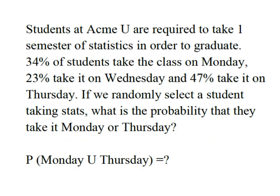In this case we have students at ACME U who are required to take one semester of statistics in order to graduate. We know that 34% of the students take the class on Monday, 23% take the class on Wednesday, and the remaining 47% take it on Thursday. So if we were to randomly select a student who was taking statistics, we want to know what's the probability that they are either in the Monday or the Thursday class.